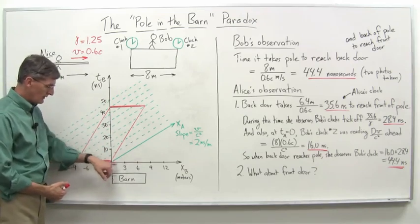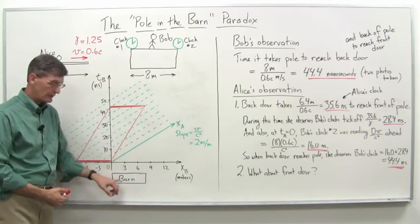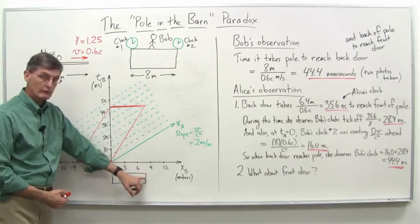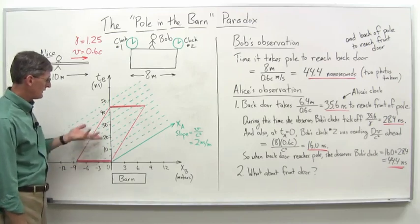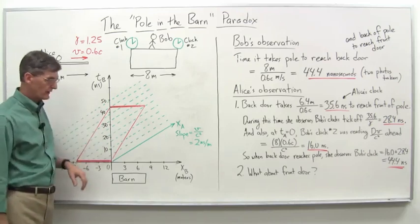Here's where the barn is. We're assuming the barn is at x sub b equals zero and extends to x sub b equals eight. So that's eight meters there, pretty close to that. And in nanoseconds, 10, 20, 30, 40 nanoseconds, and so on and so forth.